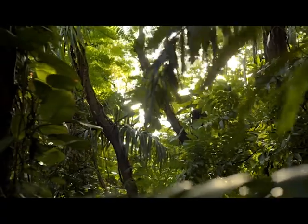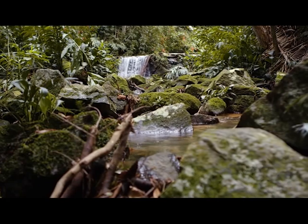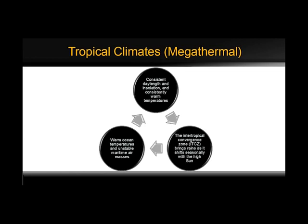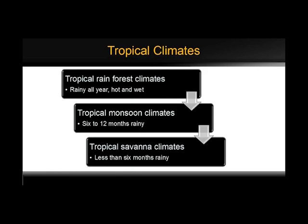The first climate type is the tropical climate, also known as megathermal. Tropical climates are found mainly around the equator. There are high temperatures and lots of rain throughout the year, and conditions are very humid. Because these climates provide plenty of heat and water, they are lush in vegetation and animal life. Tropical climates are divided into tropical rainforests, which have rain all year and are hot and wet; tropical monsoon climates, with 6 to 12 months of rain; and tropical savannah climates, with less than 6 months of rain.